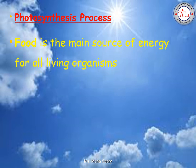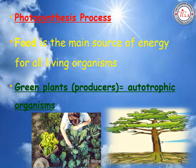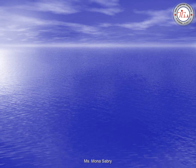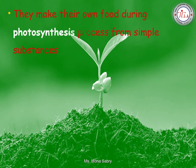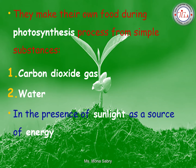Food is the main source of energy for all living organisms. Green plants are called producers or autotrophic organisms. Plants make their own food during photosynthesis from simple substances: carbon dioxide gas and water, in the presence of sunlight as a source of energy.